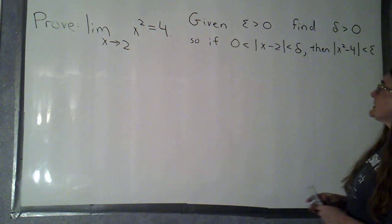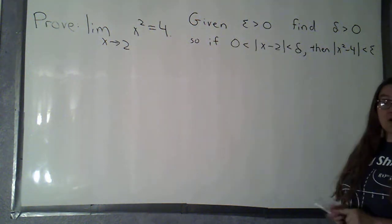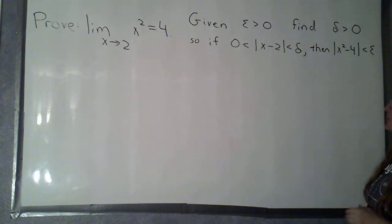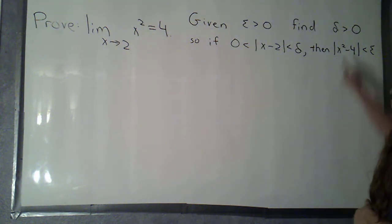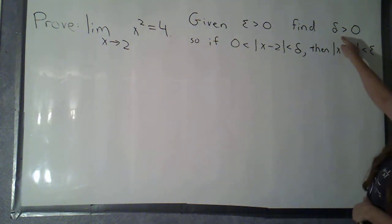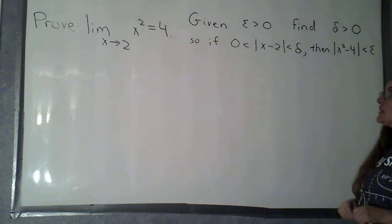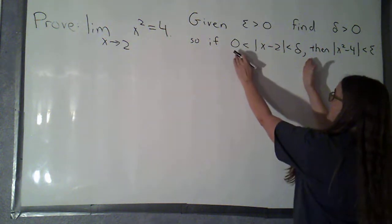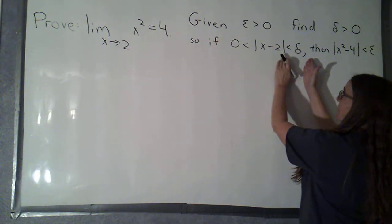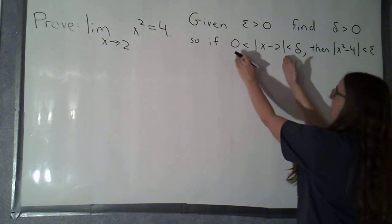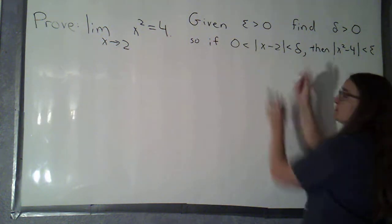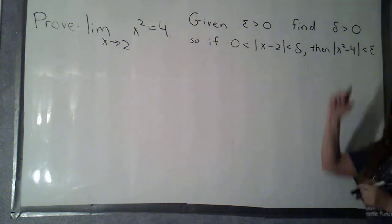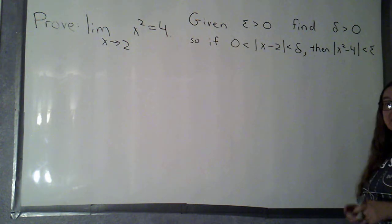I've written up here what our goal is. Given an epsilon bigger than 0, which is going to be a vertical distance, and we want to make the y values of our function within that distance of 4, we want to find a delta bigger than 0. That's going to be a horizontal distance that we're going to use to control our x values. So that if 0 is less than the absolute value of x minus 2 is less than delta — that's just saying x isn't 2, but x is within that distance delta of 2 — then the vertical distance between x squared and 4 will be less than epsilon.